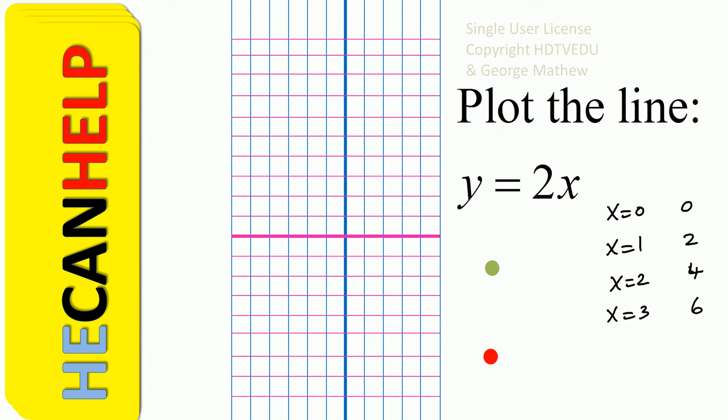Remember, it is a straight line so it does not matter which points you choose. So let's choose x is equal to 1, y is equal to 2. So our ordered pair becomes (1, 2).